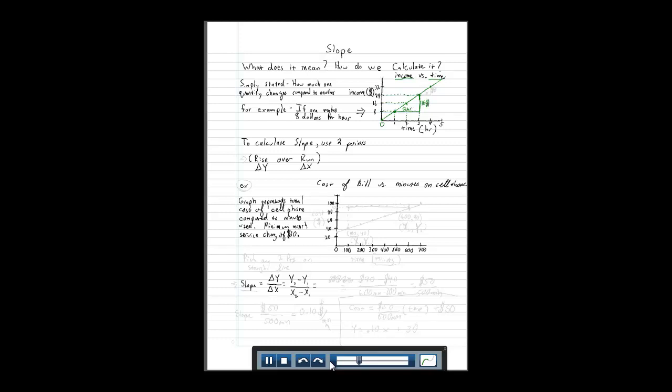Same thing if you calculated it from three to four hours, the same slope here for a straight line. In that one hour, one hour, you've made $8, because it's from $24 to $32 is $8. So $8 per hour, that's what the slope means. You're changing money over changing time.